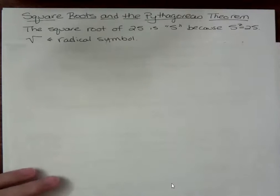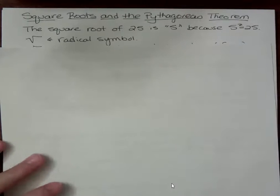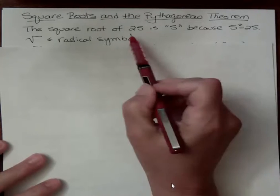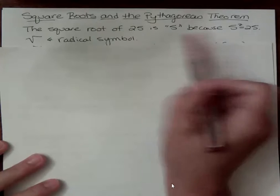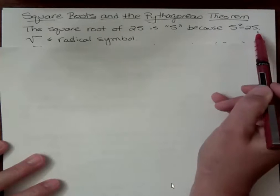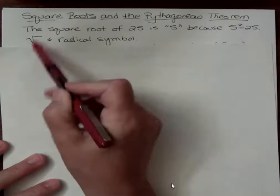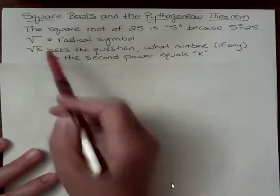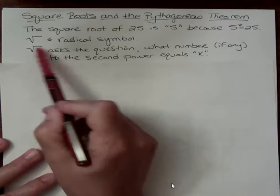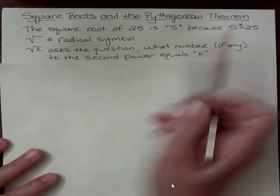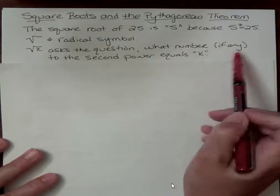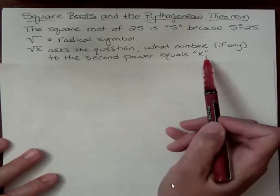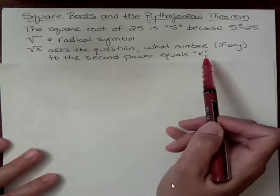When you talk about the square root of 25, the square root of 25 is 5 because 5 to the second power equals 25. This symbol is the radical symbol. And when you see that, let's say I have the square root of x, that expression asks the question what number, if any, to the second power equals x? That's what we're asking when we see a square root.